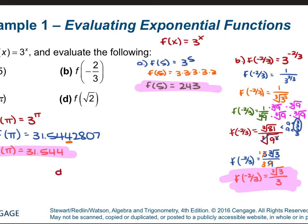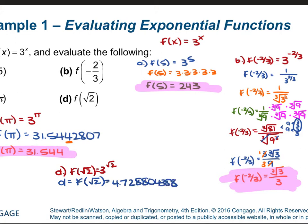For example d, we have f of the square root of 2. So it's going to be 3 to the power of the square root of 2. Remember, the square root of 2 is the same as 2 to the 1 half power. We can use our calculator for this. So 3 to the power of the square root of 2 gives us 4.728804388. Rounding to the nearest thousandths, this 8 rounds up to a 9. So f of the square root of 2 is equal to 4.729.